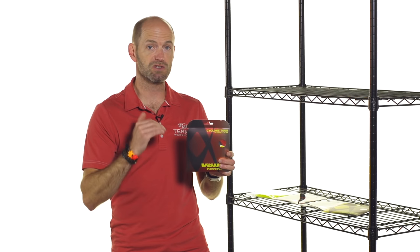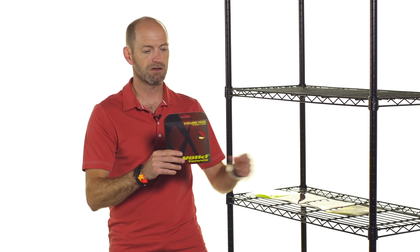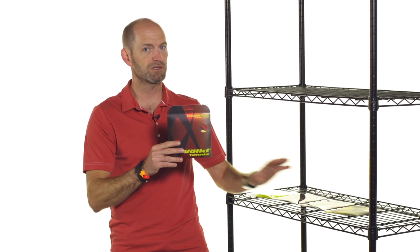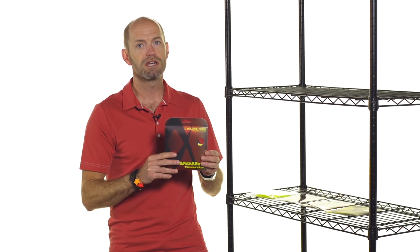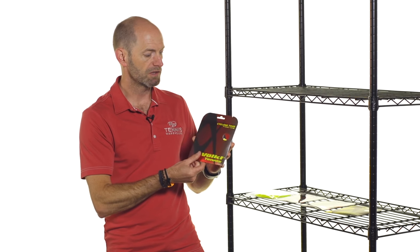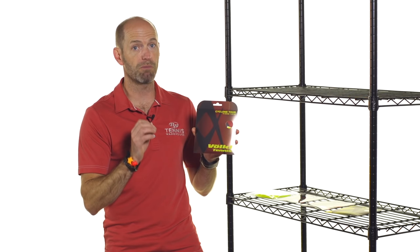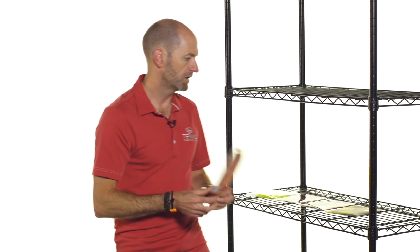So this is a string I tend to just string up compared to the regular Cyclone. In a comparable gauge, this is 16 gauge. If I'm using 16 gauge Cyclone, when I go to Cyclone Tour in a 16 gauge I'm going to bump it up probably about a couple of pounds right there just to bring in some control. But great spin and if you're looking for a bit more power out of a poly, that's another great one to go with.